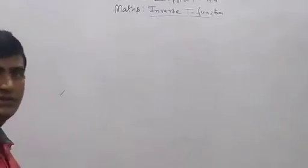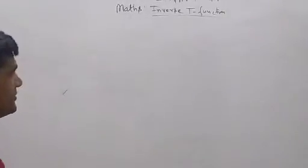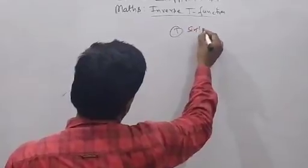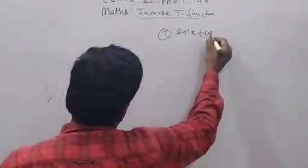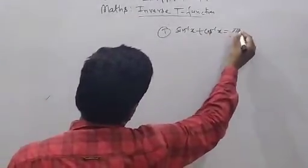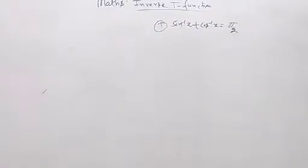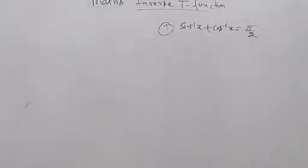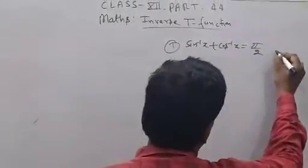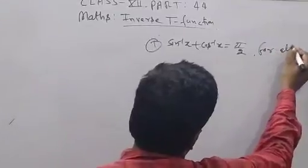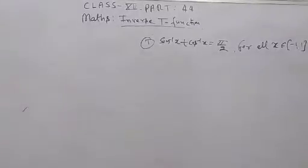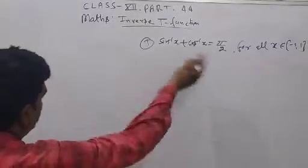We have many formulas for inverse trigonometric functions, and I am going to prove them. The first one: sin inverse x plus cos inverse x equals pi by 2. We have to prove that sin inverse x plus cos inverse x equals pi by 2 for all x belonging to the interval minus 1 to 1.